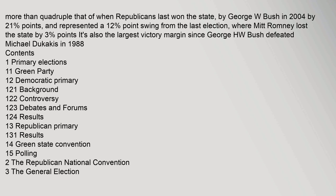Trump's margin was more than quadruple that of when Republicans last won the state, by George W. Bush in 2004 by 2.1 percentage points, and represented a 12 percentage point swing from the last election, where Mitt Romney lost the state by 3 percentage points. It is also the largest victory margin since George H.W. Bush defeated Michael Dukakis in 1988.